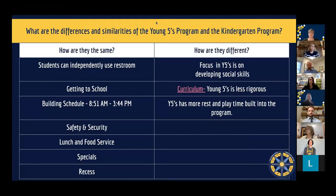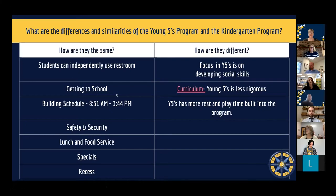Now for the differences. The Young Fives program focuses primarily on developing social skills — academics are more secondary, not the primary focus. We want kids to learn how to be in school and develop those social skills. The curriculum for Young Fives is less rigorous, focusing on early numeration, early lettering, and phonics, whereas Kindergarten students are doing more advanced academics and learning to read by the end of the year. Young Fives also has more rest time and play time built in.